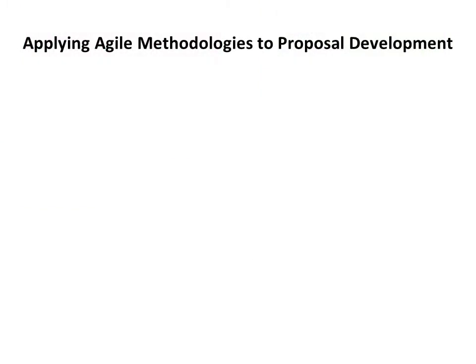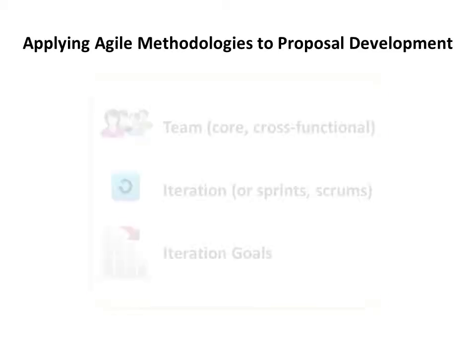There is another way to develop our proposals, using an innovation from systems development methodology called Agile. The main attributes of Agile include the core team — cross-functional with specific roles and responsibilities — the work unit, called an iteration, sprint, or scrum, which implements an entire goal from beginning to end. The individual iteration goals are determined by the team, beginning with the most important. How would this be applied to proposal development?